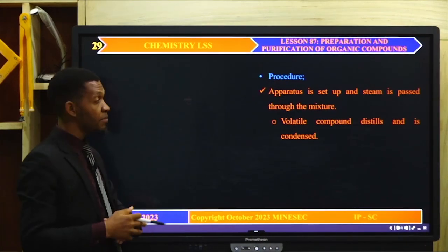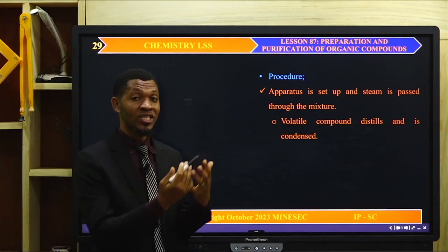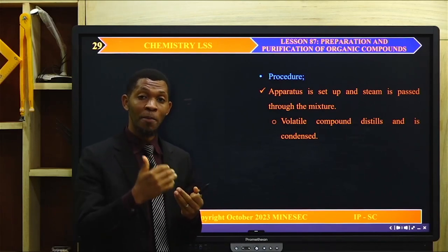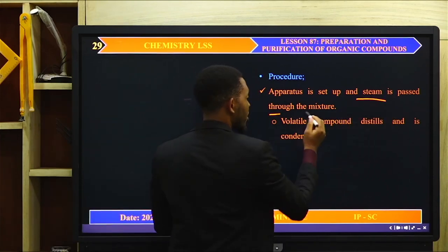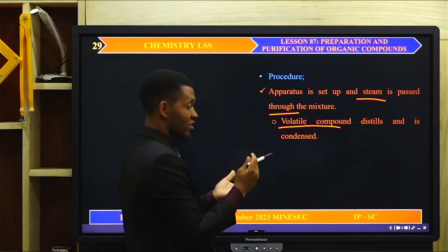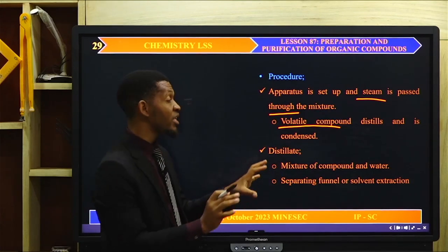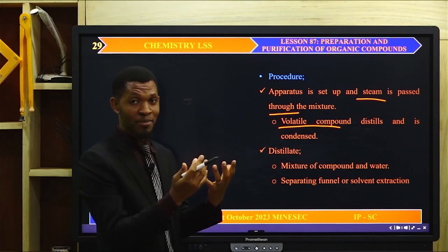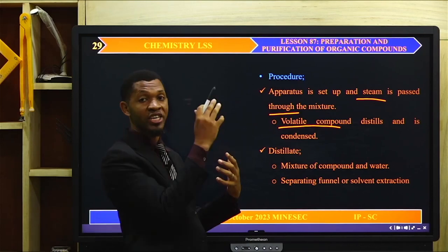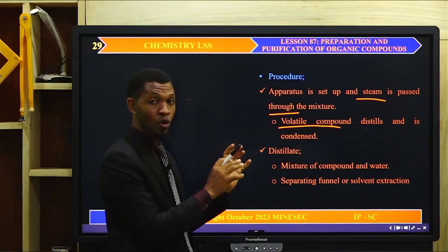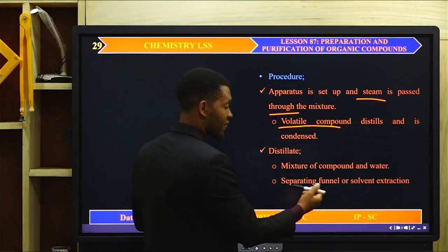The procedure for steam distillation: the apparatus is set up and steam is passed through the mixture. Steam distillation uses steam to cause the compound to boil and then it is collected. The volatile components will vaporize and will be condensed. The distillate will be a mixture of the compound and water, because when water vapor is passed through, it causes the liquid compound to also boil, and the mixture of the compound and water will condense to form the distillate.